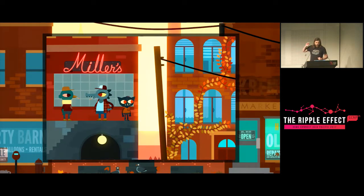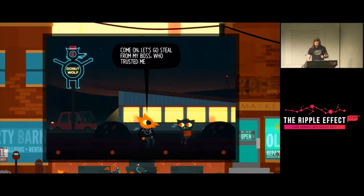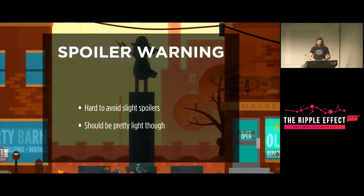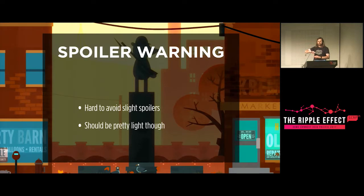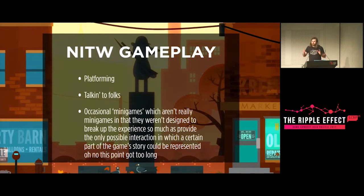Night in the Woods is about this cat. Her name is May — a college dropout who has just moved back into her family home in the run-down town of Possum Springs. She finds all of her friends have moved on with their lives, but she really has not. It's a game primarily about being stuck in bad life situations, while also being extremely colorful and cutesy, but also really quite depressing. I must give a spoiler warning — it's very hard to avoid light spoilers, but this game has been out for more than six months, so I've got a little bit of leeway. The gameplay is primarily platforming, talking to people, and doing little minigames.